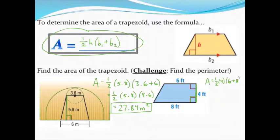Multiply that by the sum of the bases: 6 and 8. You can type that in just the way it is, but I'd recommend simplifying the parentheses first. So 6 plus 8 gets you 14, and then multiplying one-half times 4 times 14, we get an area of 28 square feet.